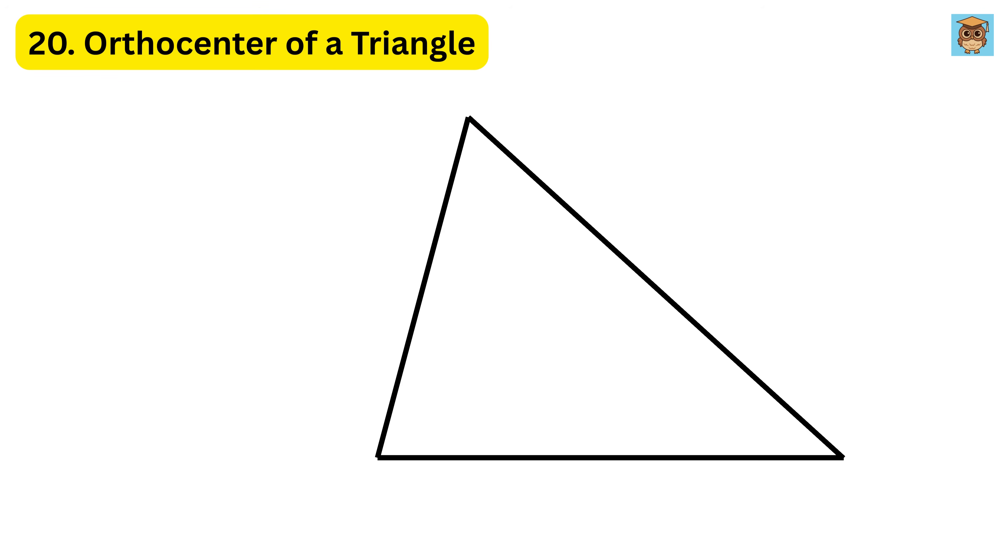20. Orthocenter of a triangle. Take one corner of the triangle. Draw a line from that corner down to the opposite side so it forms a right angle. This line is also called as the height or altitude of this triangle for this base. Now, do the same thing from the other two corners. The place where all three lines cross each other is called the orthocenter of this triangle.